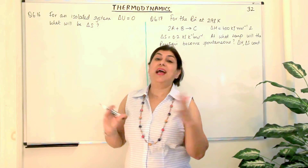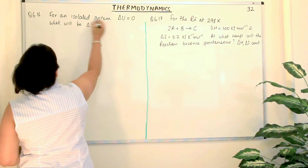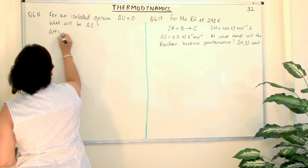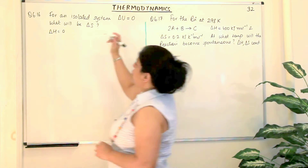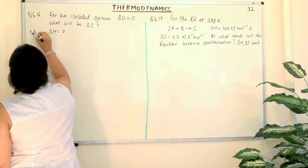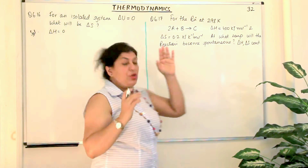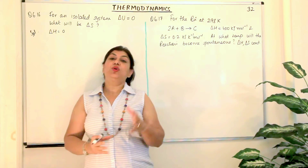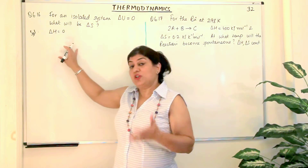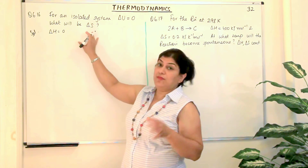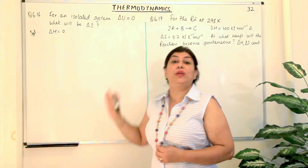That is, there is no enthalpy change in this case. So when they tell you it is an isolated system, it means that delta H should be equal to 0 for such a system. And delta U is already given to us as 0. So delta H equals 0, meaning no exchange of energy is taking place in this process, yet the process is taking place. That is why we have been told that change in internal energy, delta U, is also equal to 0.